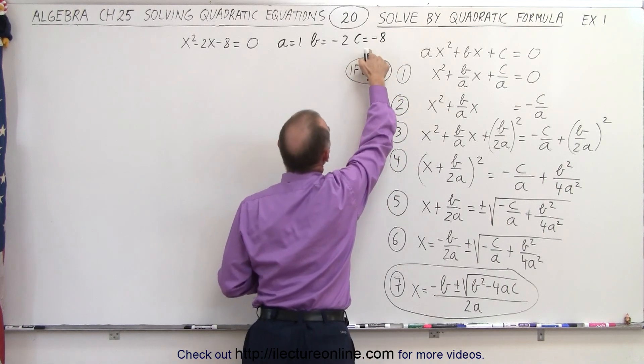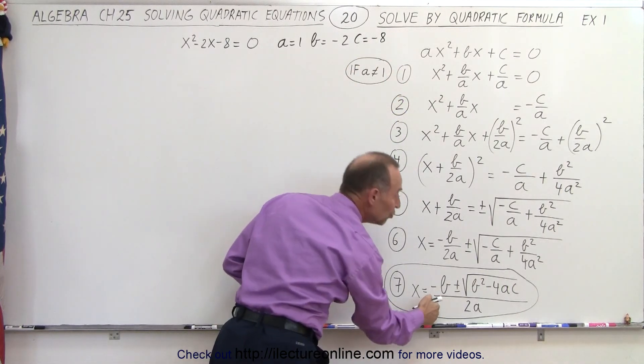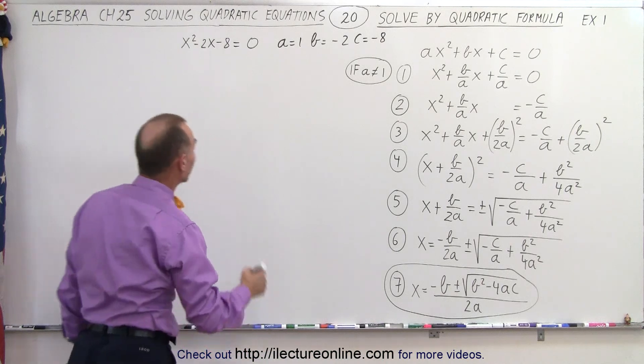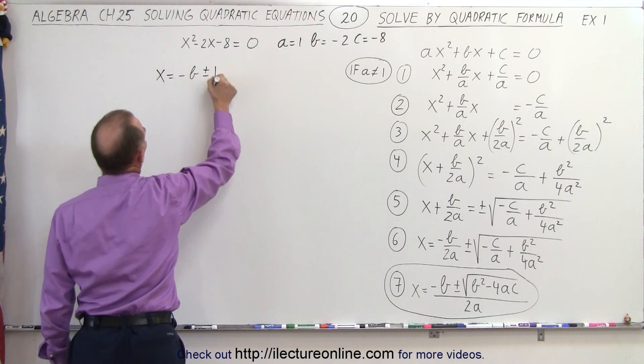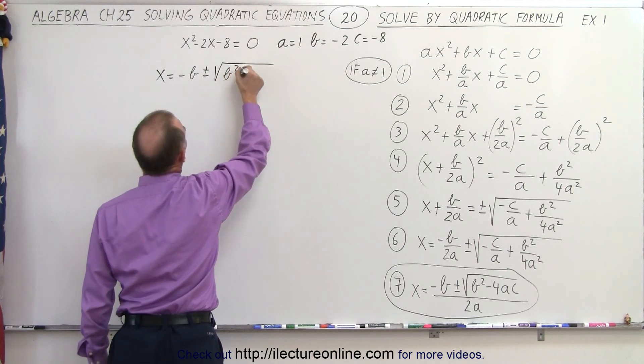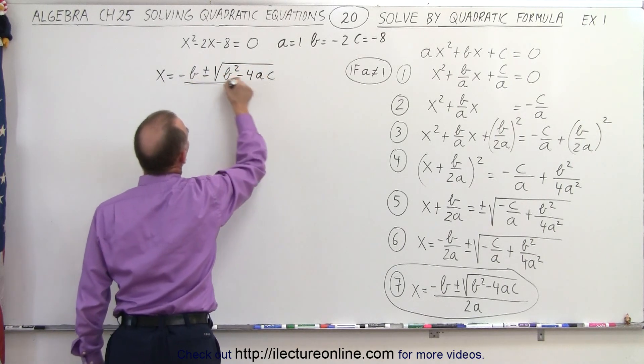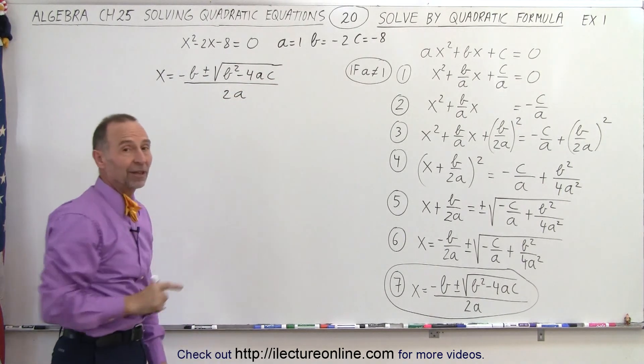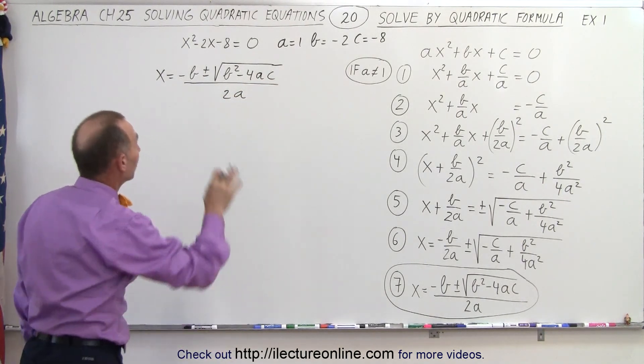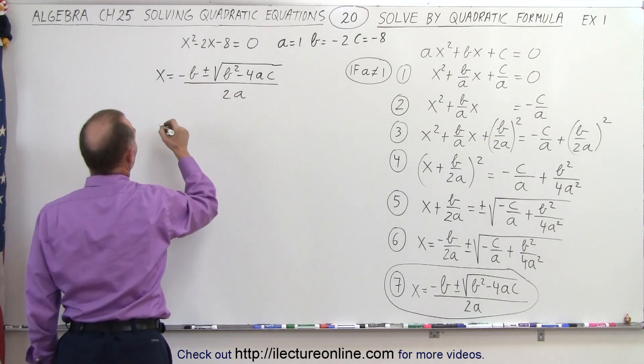We're going to take those three numbers and plug them into our quadratic formula. So X equals minus B plus and minus the square root of B squared minus 4 times A times C, all divided by 2A. It's a really good idea that you memorize that formula. Now let's plug in the numbers for our particular example.